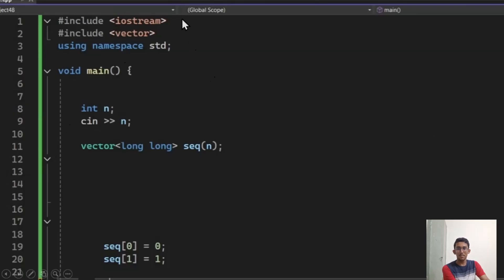Now let's put this into our IDE. Hash include iostream, hash include vector since we are using vectors here. Using namespace standard, so that I don't have to use std again and again. Then I have used the function void main, because this is simply a program for displaying the terms of Fibonacci sequence. I don't have to return anything here.